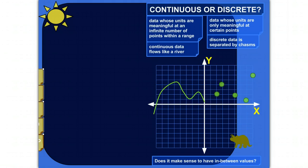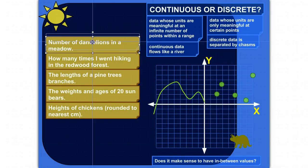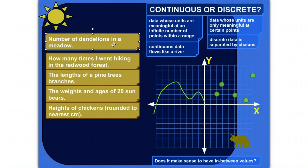Let me grab these guys and pull them in. Okay, let's look at this first one. Say I'm measuring the number of dandelions in a meadow. Is that continuous or discrete? Well, what are some possible answers? There could be 3, there could be 1,000, there could be 10 million, there could be 7.